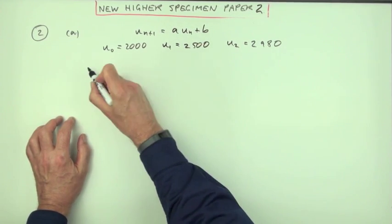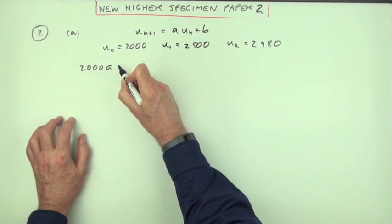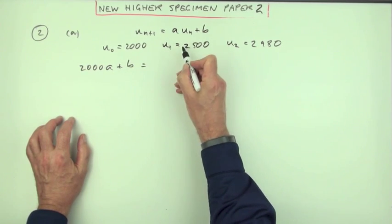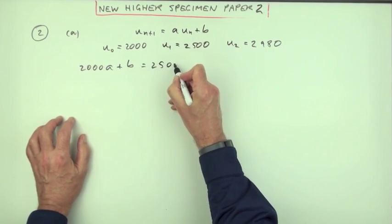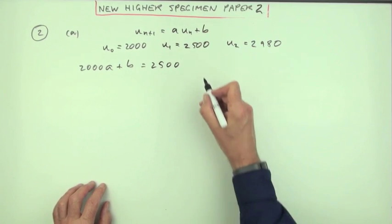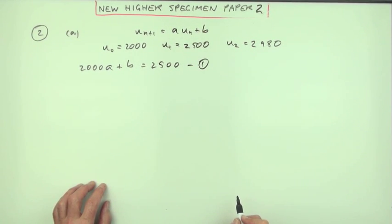So A times the 2,000, I'll put that as 2,000 times the A, plus the B gives you the following one which is 2,500. There's an equation connecting A and B.